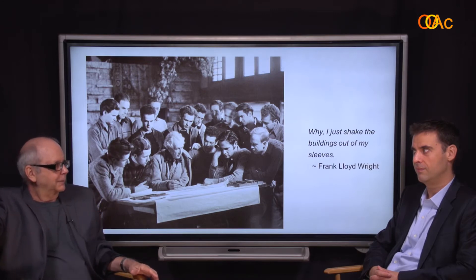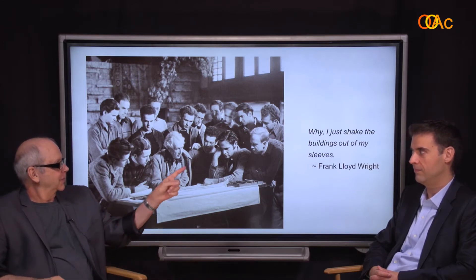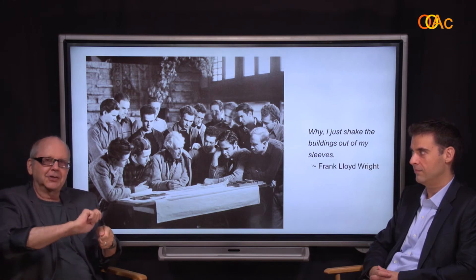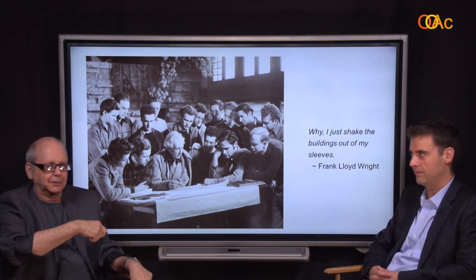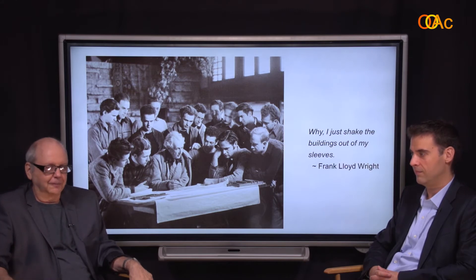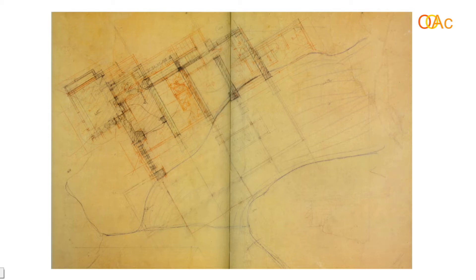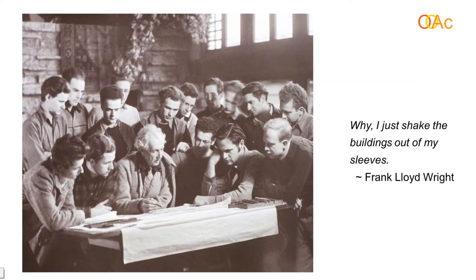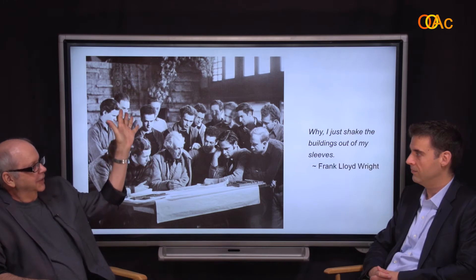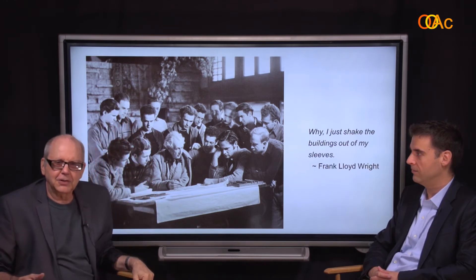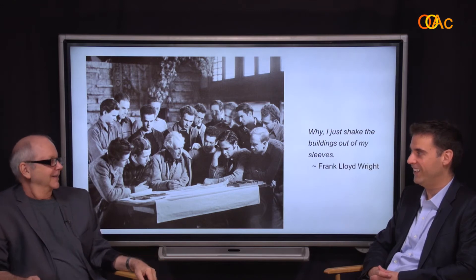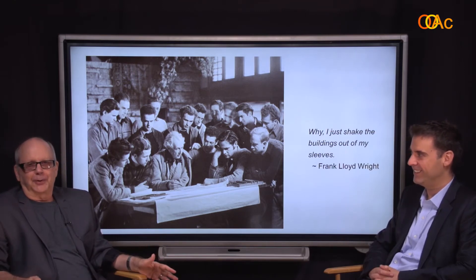At that point Wright laid out the paper, and the students were all standing around with razor blades sharpening pencils and feeding them to him. He just ground out the structural grid, the first floor, the second floor. Here's his drawing laying out the beams for the cantilevers. And just as he was finishing the perspective rendering, Kaufman came to the door and Wright said, 'Where have you been? We've been waiting for you.' That's a Frank Lloyd Wright story.